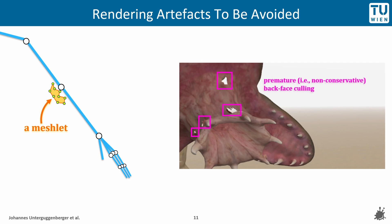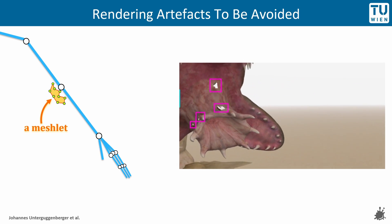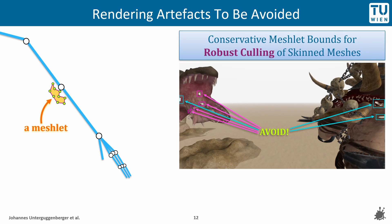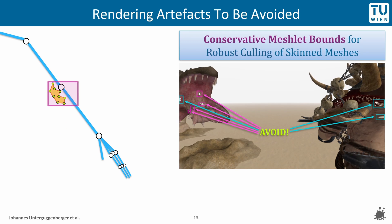In our paper, we describe a technique which avoids such artifacts. It is able to avoid both types — those from premature view frustum culling and those from premature backface culling — and enables robust culling, meaning that no artifacts will be visible when using it. What we require for achieving that are conservative bounds per meshlet, namely both for its spatial extents under animation, indicated by the bounding box on the slide, and also for its normals distribution under animation, indicated by the cone on the slide. It represents a conservative estimate of all possible normals that can emerge for this particular meshlet under animation.